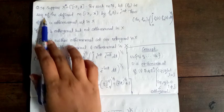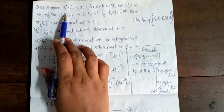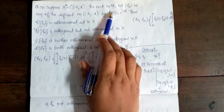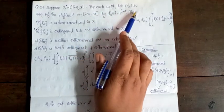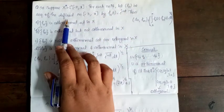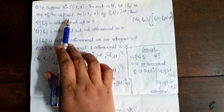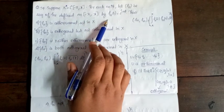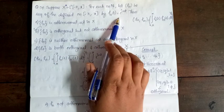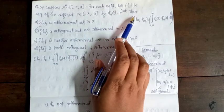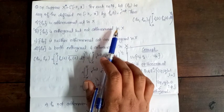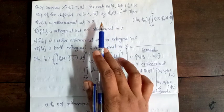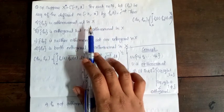Next, Question 54. Suppose X = L²[−π, π]. For each n in ℕ, let fn be a sequence of functions defined on the closed interval [−π, π] by fn(t) = e^(int).